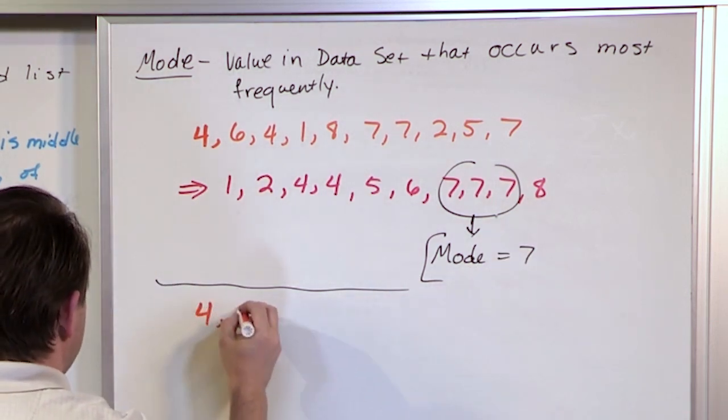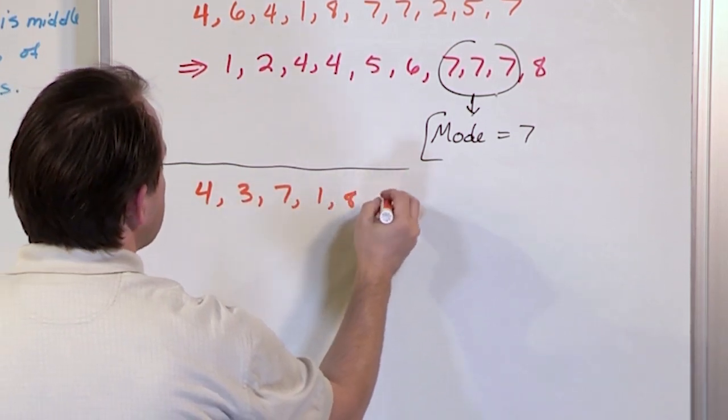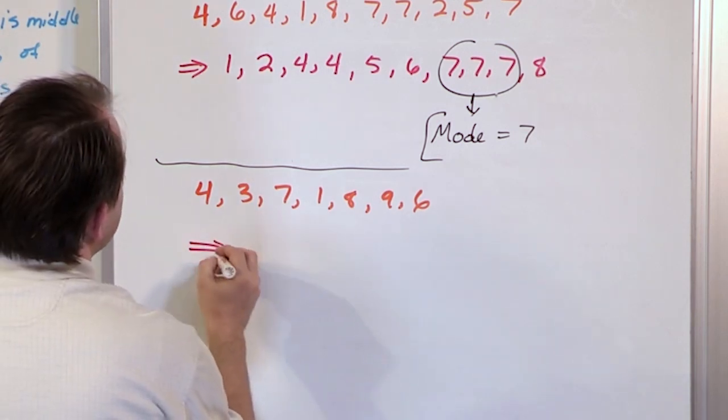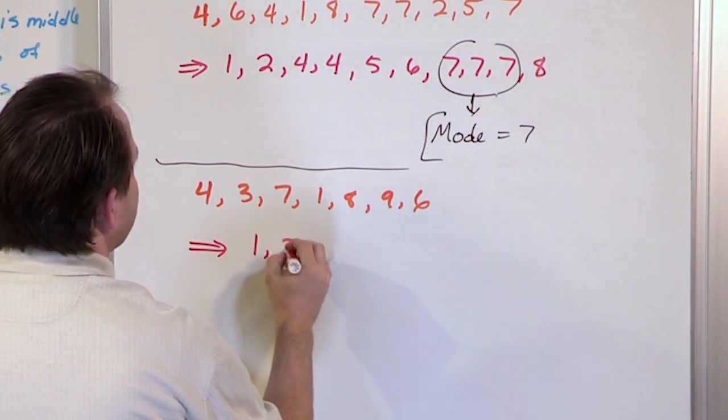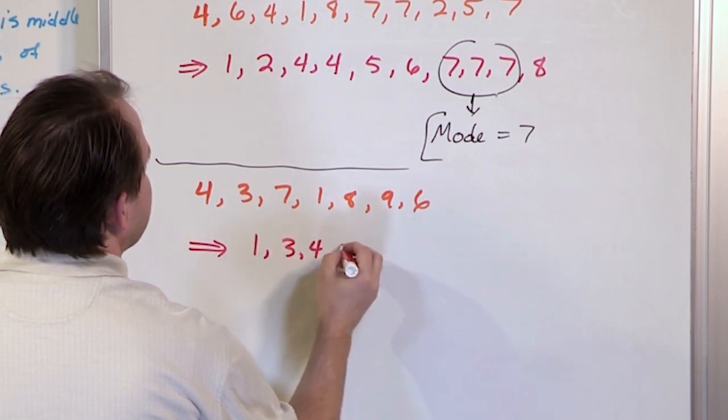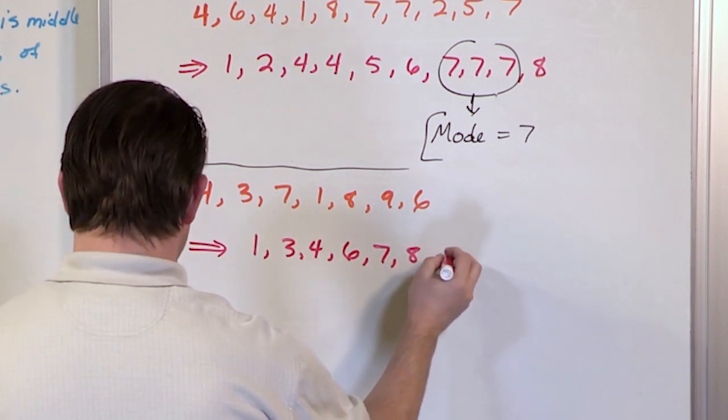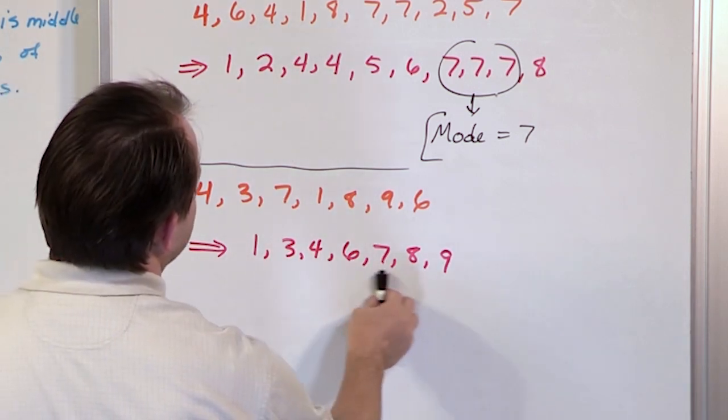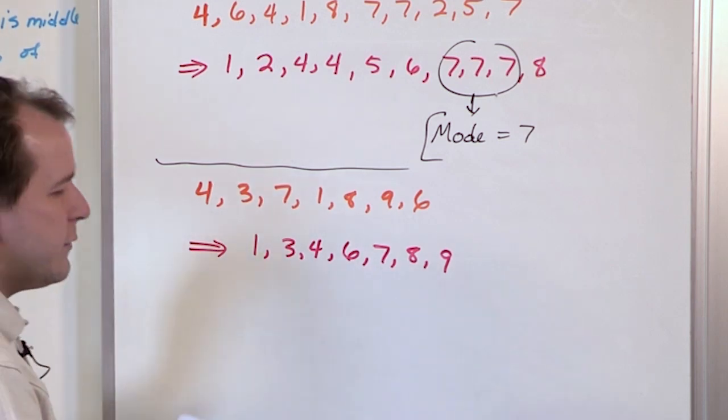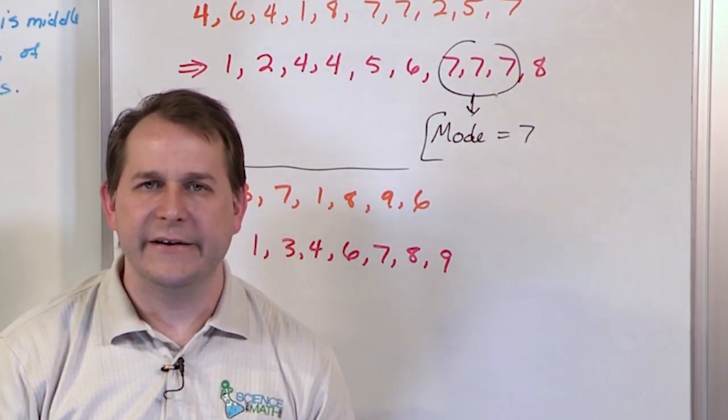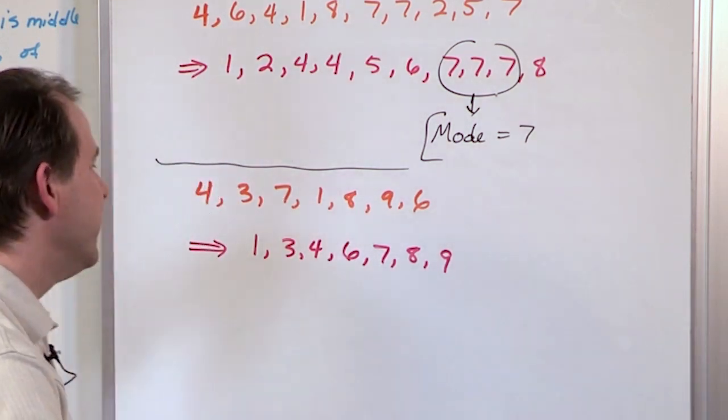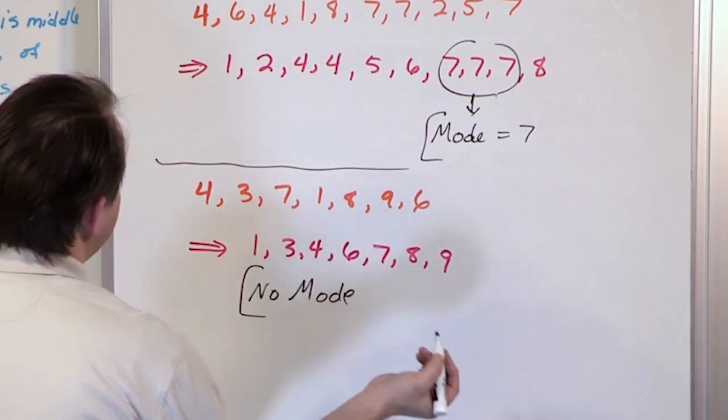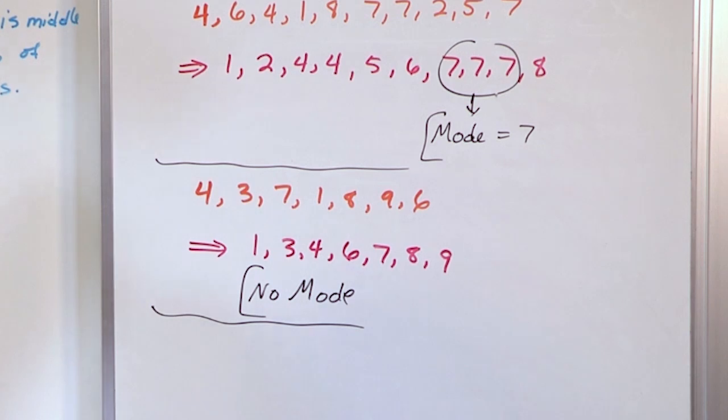What if I have 4, 3, 7, 1, 8, 9, and 6, and I want to find the mode of that. So again, I recommend, just to make it easy, that you line these guys up in ascending order. So 1, 3, 4, 6, 7, 8, 9. One, three, four, six, seven, eight, nine. And then I look and I say, which one is repeated more than the others? Well, I look at it, and actually none of them are repeated. So when you have a data set where no value is repeated, then you cannot have a mode. So in this particular case, you'll just write down no mode, and that would be your answer because there just does not exist a mode for that set of data.